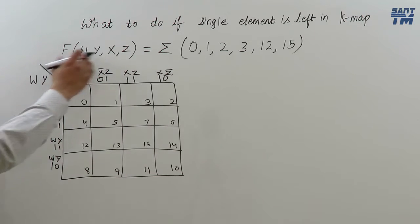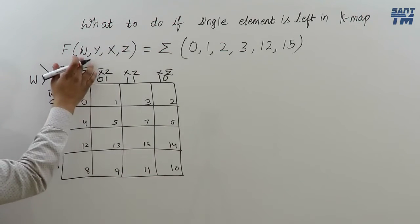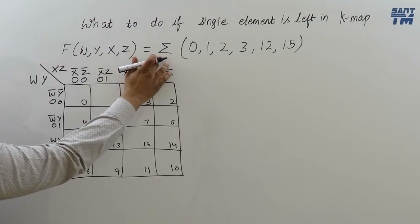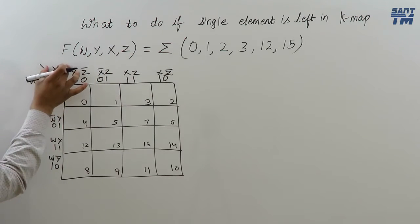For example, consider this is the K-map that we have to construct. W, Y, X, Z and is of SOP kind. So W, Y come here, X, Z will come here.